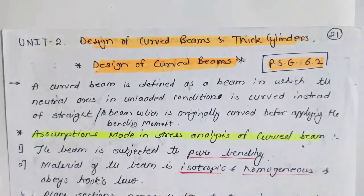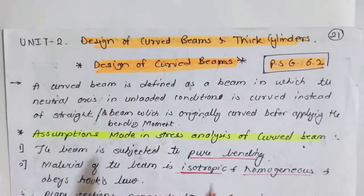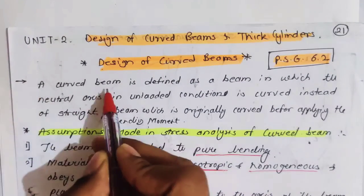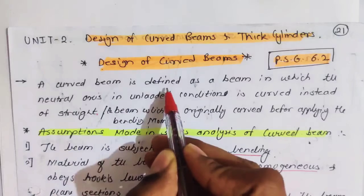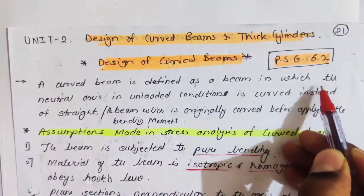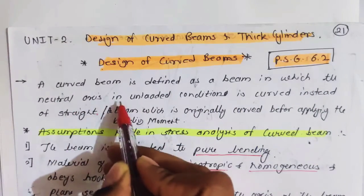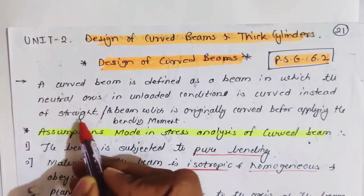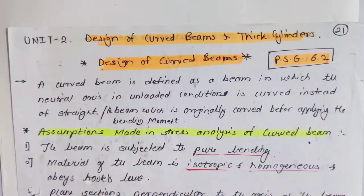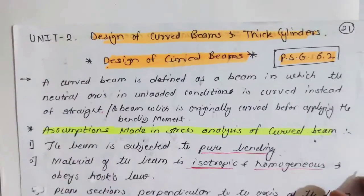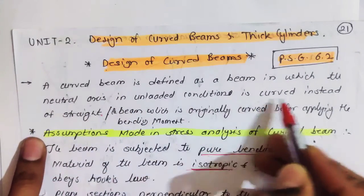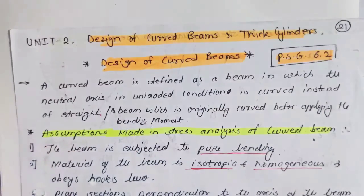A curved beam is defined as a beam in which the neutral axis in the unloaded condition is curved instead of straight. So in a straight beam you will find the neutral axis as straight, whereas in a curved beam you will find it as curved.